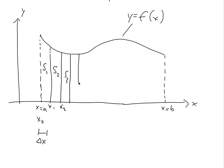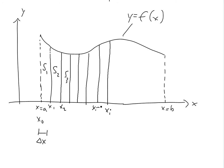If you keep doing this on and on, all the way up to somewhere in here — this is the general one, we don't know what number it is, we'll just call it xi. So then this one here is just going to be xi minus 1. Just like this one here: this one's x2, this one is going to be x1, it's xi minus 1, et cetera.